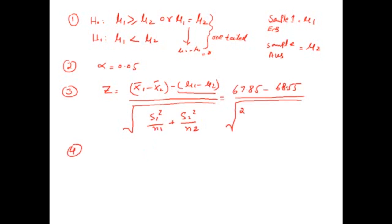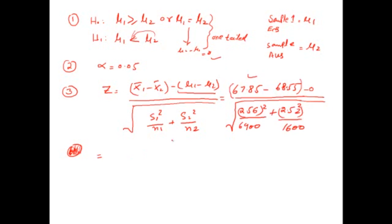Solving: z equals (67.85 minus 68.5) divided by square root of (2.56-squared over 6400 plus 2.52-squared over 1600). This gives minus 0.7 divided by 0.0706, and finally the value is minus 9.92.